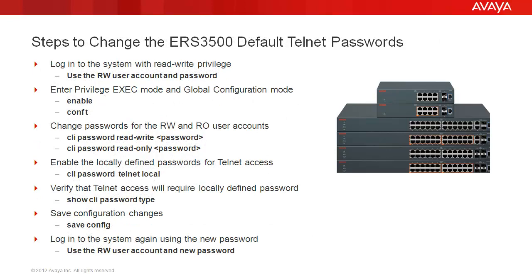We'll go through these steps to change the ERS 3500 default Telnet passwords. First, we log into the system with the rewrite privilege using the RW user account and password. Then we enter the privilege exec mode with enable, then configuration mode with conf t. Then we change the password for the RW user account using the command CLIPassword rewrite password. Then we do the same thing for the RO user account using the similar command CLIPassword reonly password.